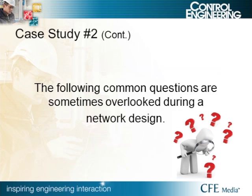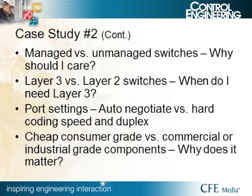I came up with common questions that are sometimes overlooked during a network design. The first: managed versus unmanaged switches — why should I care? Layer 3 versus Layer 2 switches — when do I need Layer 3? Port settings: auto-negotiate versus hard-coding speed and duplex. And cheap consumer-grade versus commercial or industrial-grade components — why does it matter? I'm going to go through these four questions in detail and give a good example of why you should be asking them every time you start a new design.